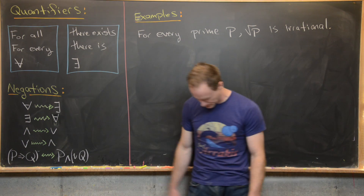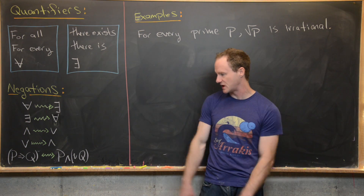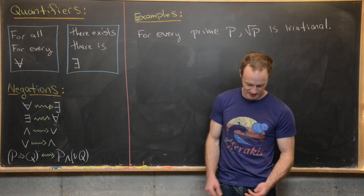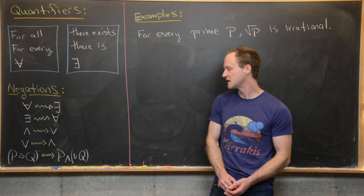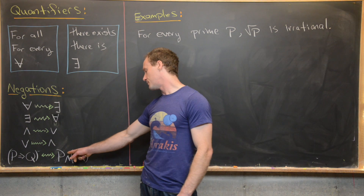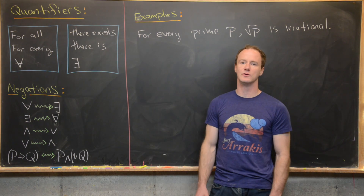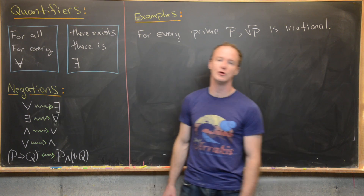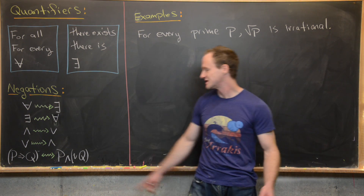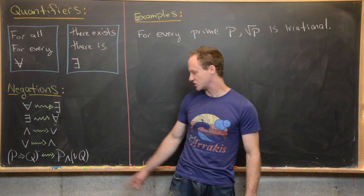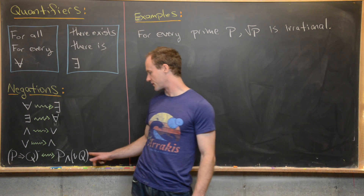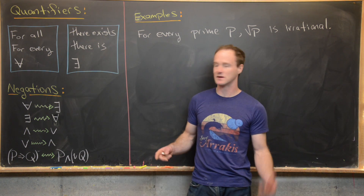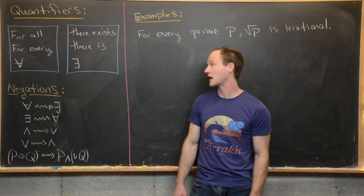If we negate an implication statement, it's a bit tricky, but it goes like this. The implication or conditional statement P implies Q is negated as P and not Q. Notice on the right-hand side, P would be true but Q would be false, which is not allowed under this implication. If you draw the truth tables for each side of this negation, you'll see that they're exactly opposite.